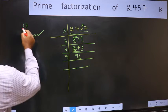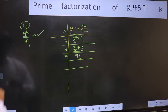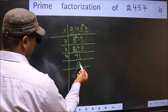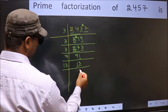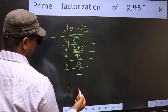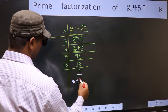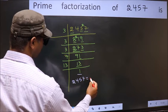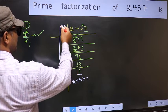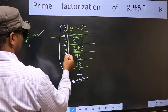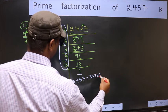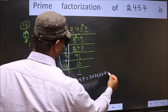Here we should write the quotient: 13. Now we have 13, which is a prime number. So 13 times 1 is 13, and we get 1 here. So the prime factorization of 2457 is the product of these numbers: 3 times 3 times 3 times 7 times 13.